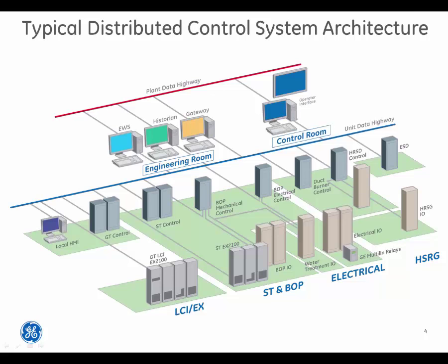A typical distributed control system architecture is shown here. In this architecture, major components are controlled by the DCS automation platform. In this scenario, an HMI is able to interact with any one of those elements, enabling comprehensive automation and maintenance and services performed on a common set of control system components.